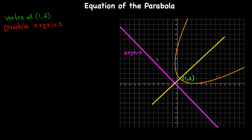In my previous video, when the focus was given, I found a point on the parabola, joined it to the focus, and used the property that the distance from the focus equals the distance from the directrix to write the equation. But here the focus is unknown, so my first goal is to find the focus. There are two lines — the directrix and the axis of the parabola — which are perpendicular to each other, and the axis passes through the vertex at (1, 2).